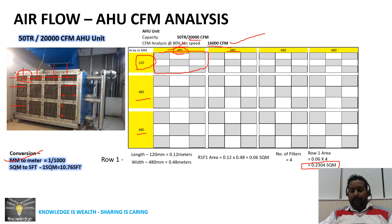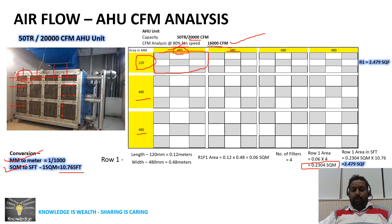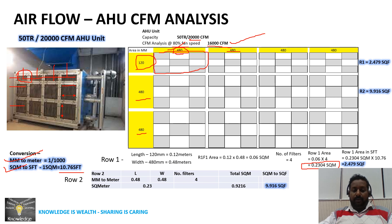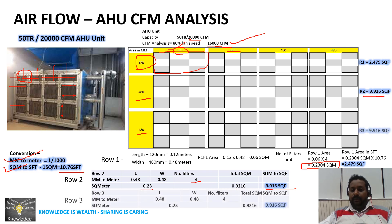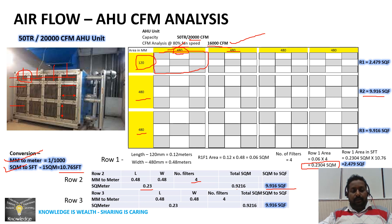Converting 0.2304 square meters to square feet: 1 square meter = 10.76 square feet, so 0.2304 × 10.76 = 2.479 square feet for the entire row 1 filter section. Carrying out the same calculation for row 2 and row 3 — with filter dimensions of 480 mm × 480 mm and four filters each — row 2 area = 9.916 square feet and row 3 area = 9.916 square feet, as they share the same dimensions.